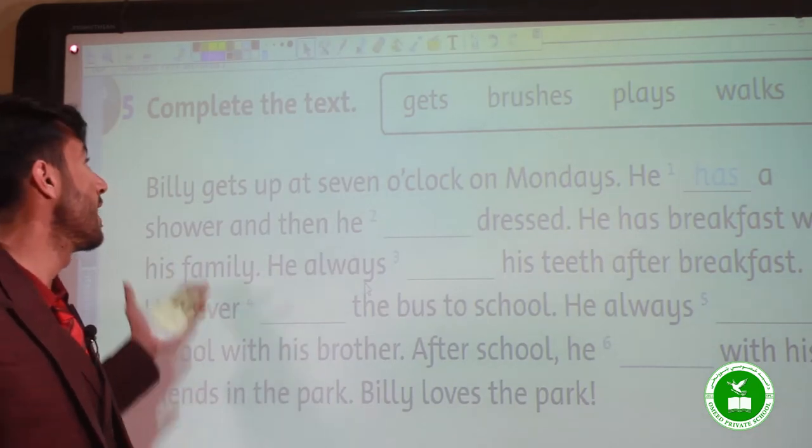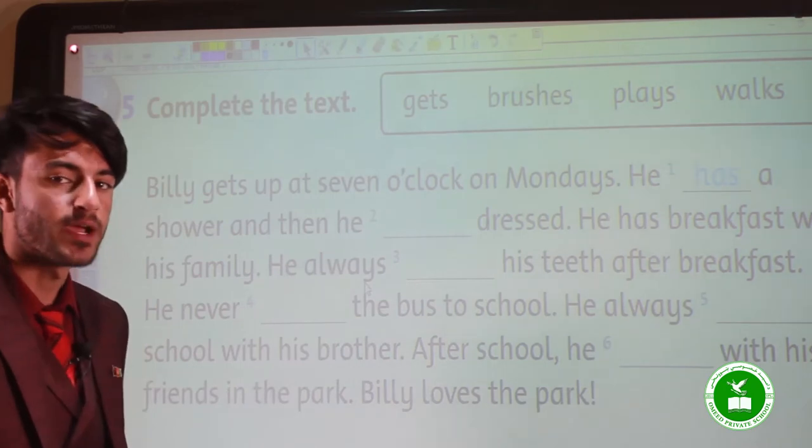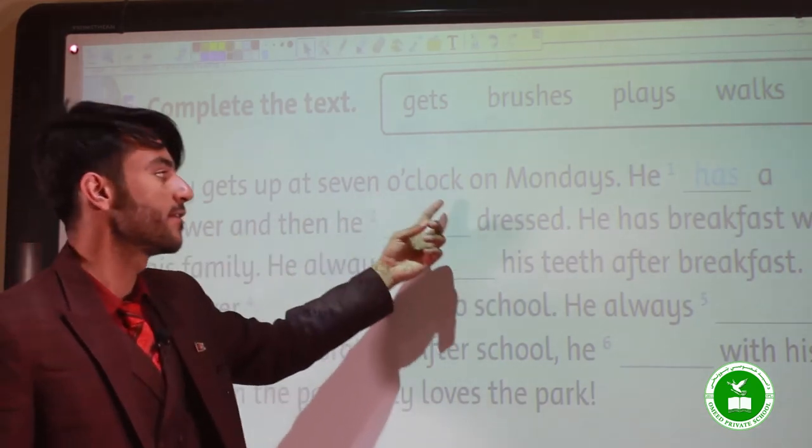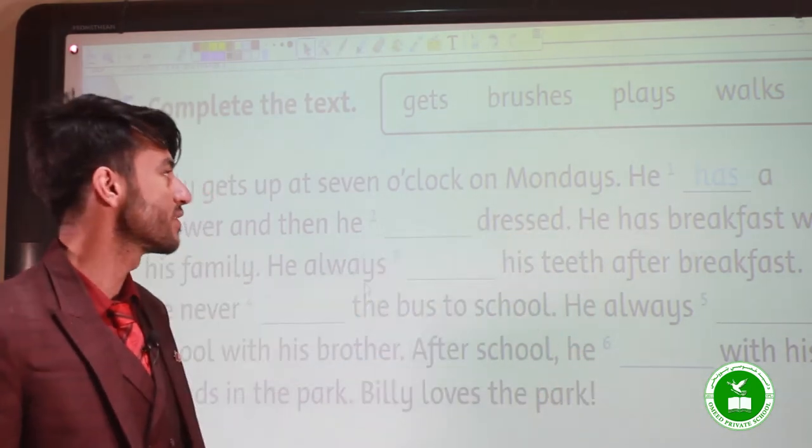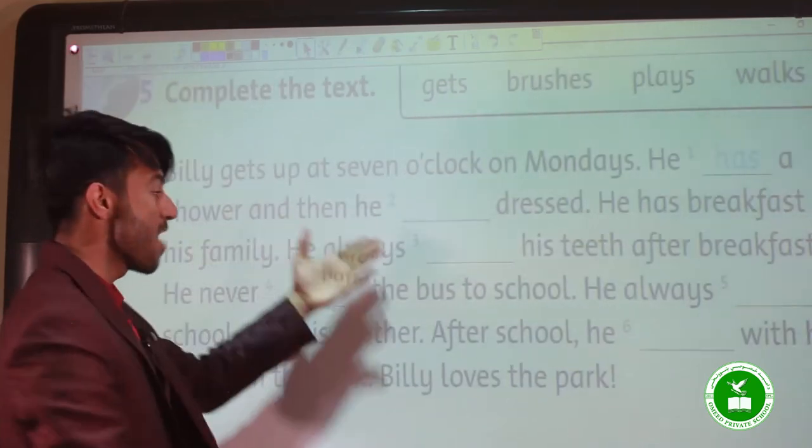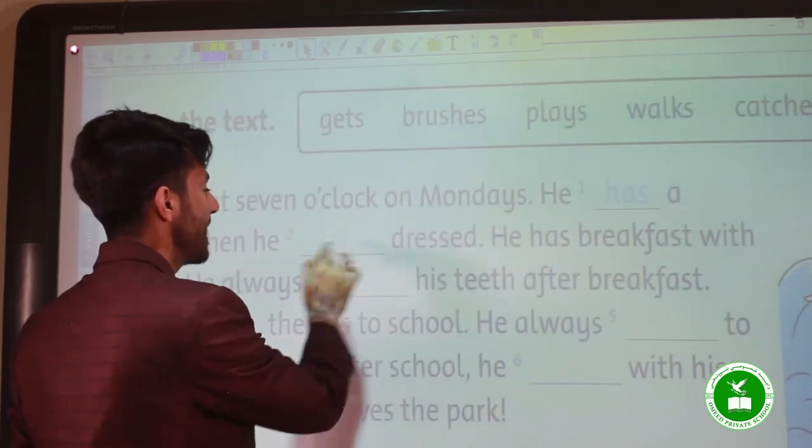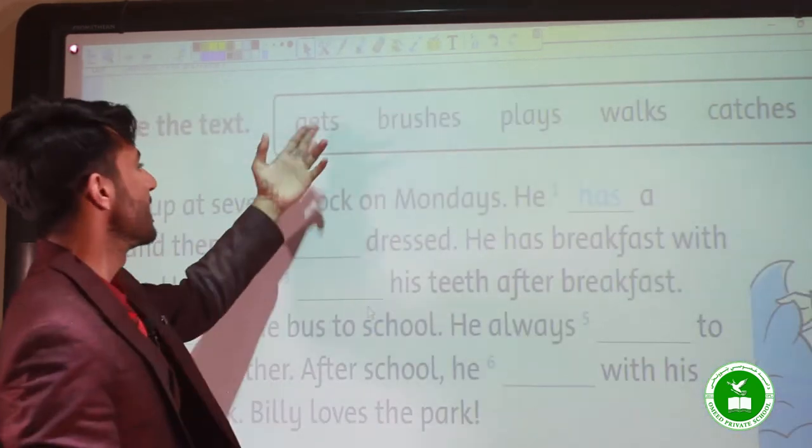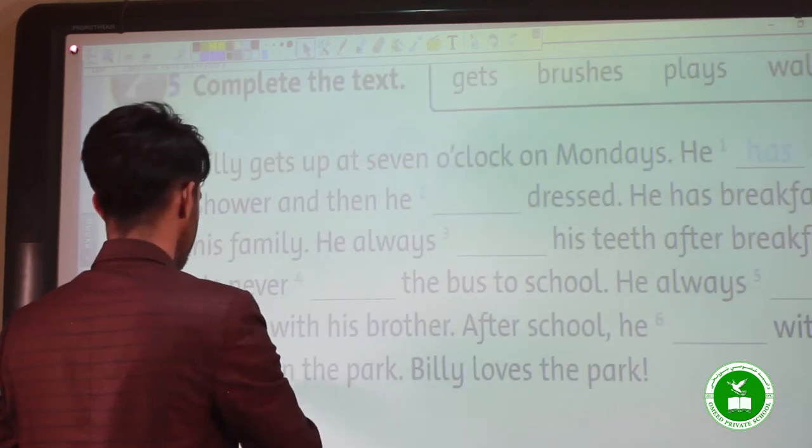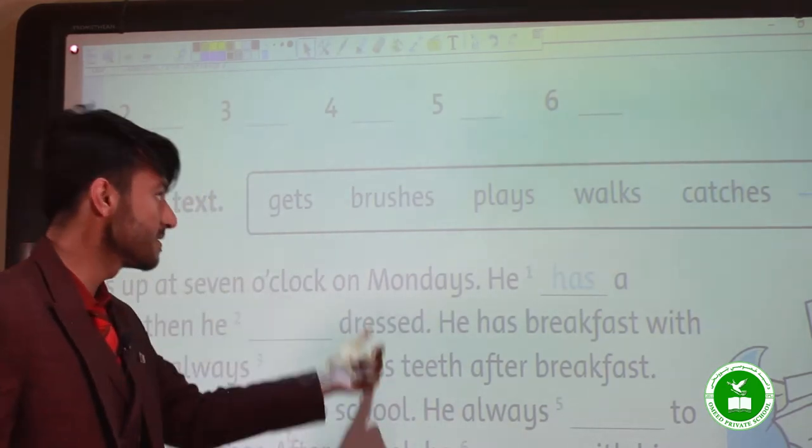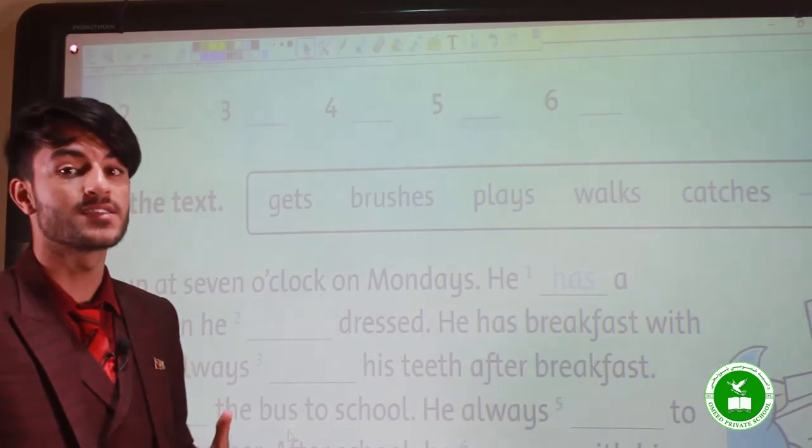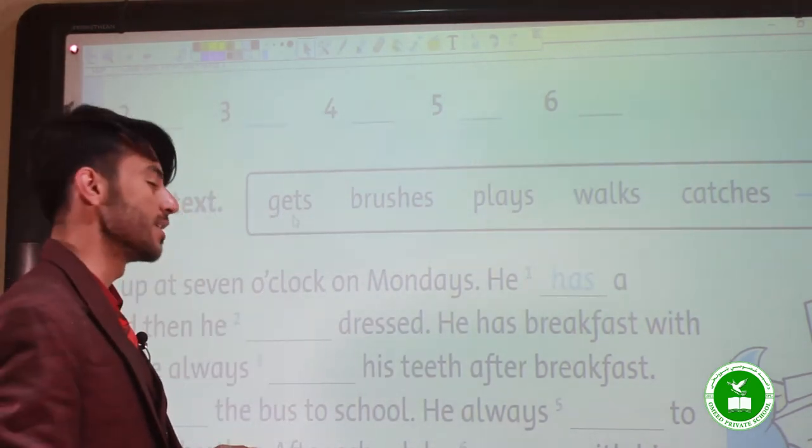Part five, exercise five: complete the text. The first one is example. Billy gets up at 7 o'clock on Mondays. He has a shower, and then he gets dressed. He brushes dressed, he plays dressed, he walks dressed, he catches dressed. Which one is correct? He gets dressed, very good.